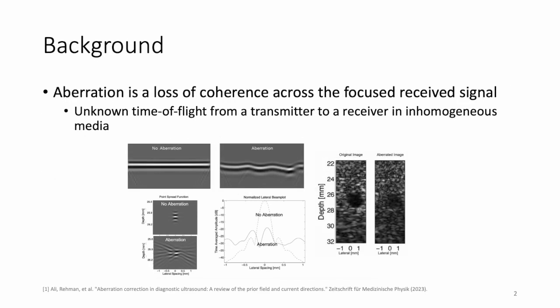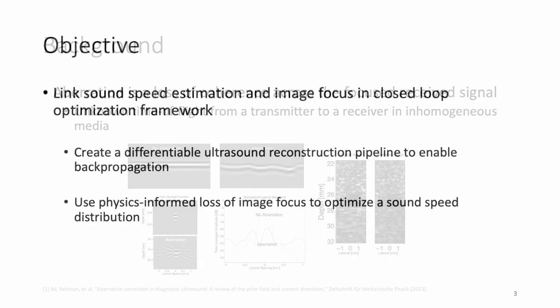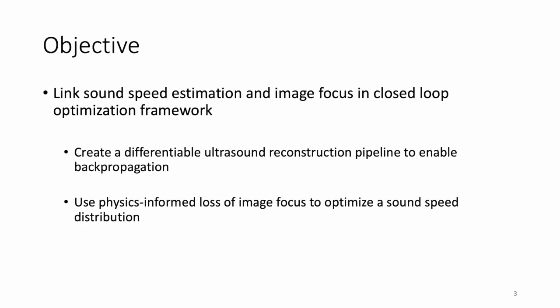Aberration in ultrasound imaging describes the decorrelation of a received beam-formed signal across the aperture. Aberration is commonly attributed to an unknown time of flight between a source and the transducer surface due to an error in the assumed sound speed distribution of the interrogated medium. Recently, pulse-echo sound speed estimation has increased in popularity. Sound speed-aware beamforming methods enable the correction of aberration when the correct sound speed distribution is known. Until now, these two problems have often been addressed separately.